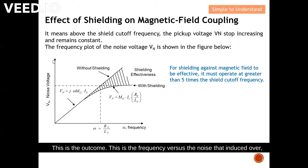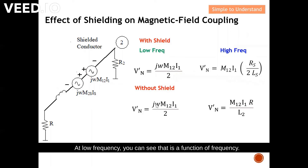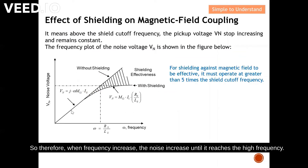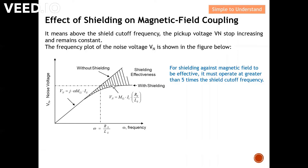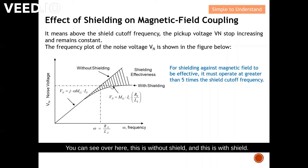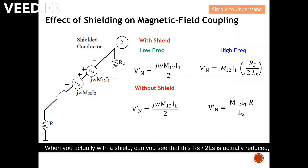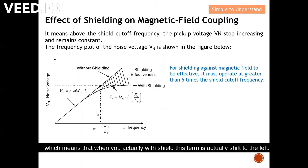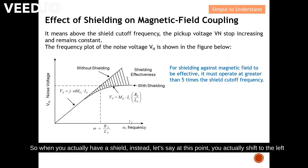This is the frequency versus induced noise plot. At low frequency, you can see it is a function of frequency — as frequency increases, the noise also increases. As it reaches higher frequency, you can see the curve without shield and the curve with shield, with the transition point at Rs/Ls. With a shield, Rs/2Ls is reduced, meaning the transition shifts to the left, so the saturation effect happens much faster when you have a shield.